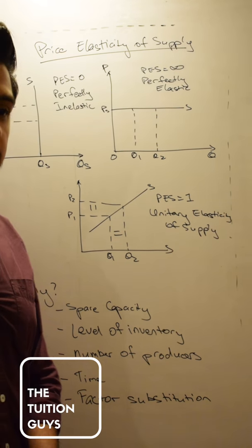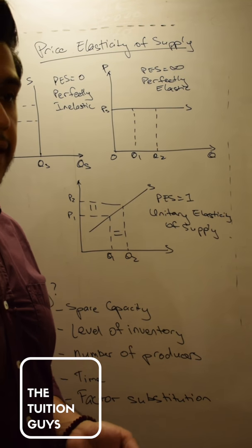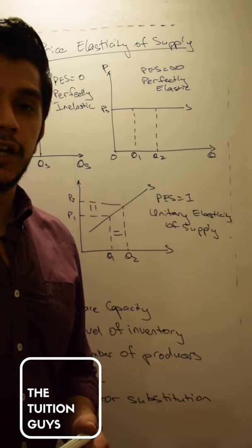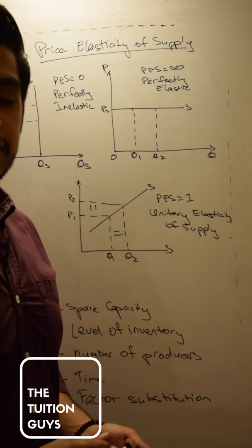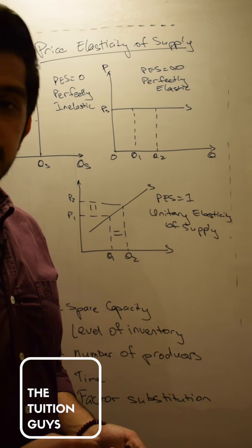Time is also a variable because it takes time to make something. The best example of that is agriculture. Do the farmers have enough time to actually grow a pile of rice in days? No, they don't, because it takes months to actually grow rice.